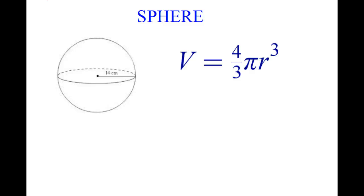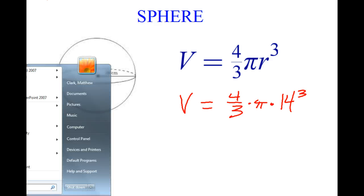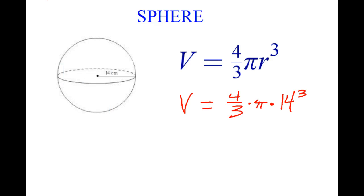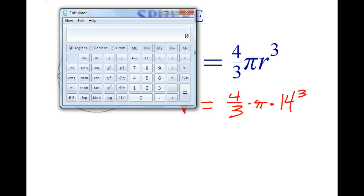All right, so to do this one, we're just going to go ahead and we're going to fill in the missing pieces. So I have 4/3 times pi times the radius, which in this case is 14, and we're going to cube that, which means 14 times 14 times 14. All right, now I'm going to use a calculator to figure this out. So what I'm going to do is divide this thing by 3.